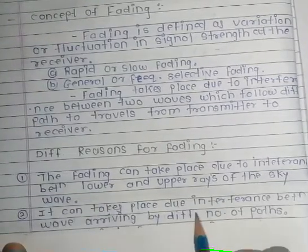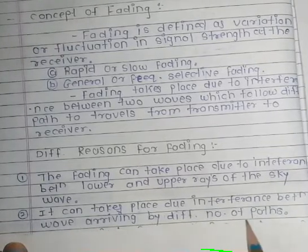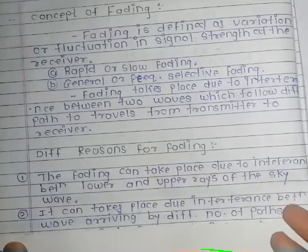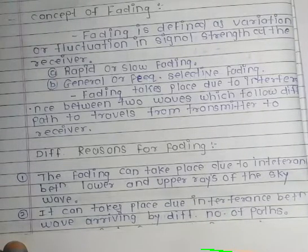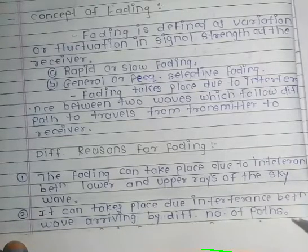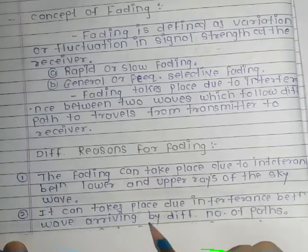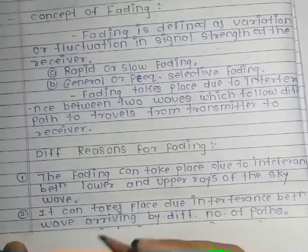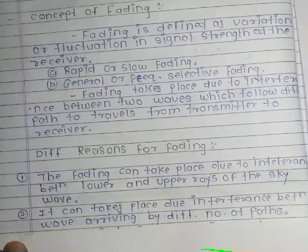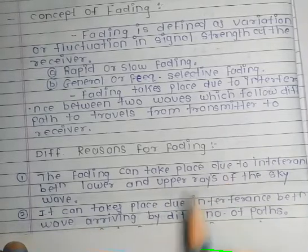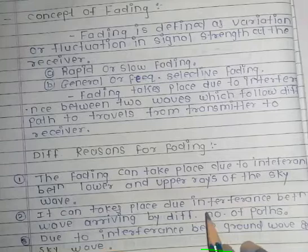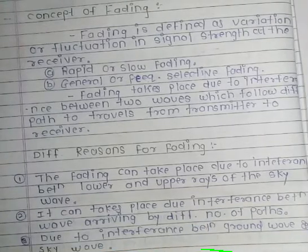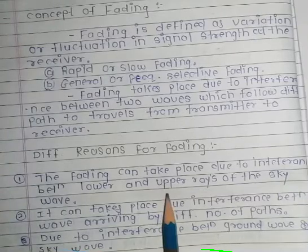The second reason is that fading can take place due to interference between waves arriving by different numbers of paths. The third reason is due to interference between the ground wave and sky wave — if there is a disturbance between the ground wave and sky wave, fading can happen.